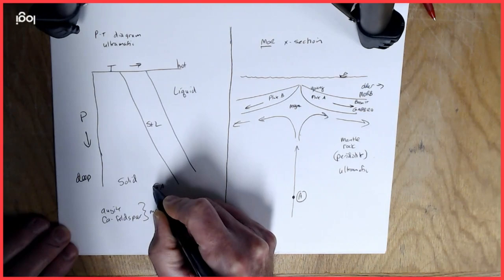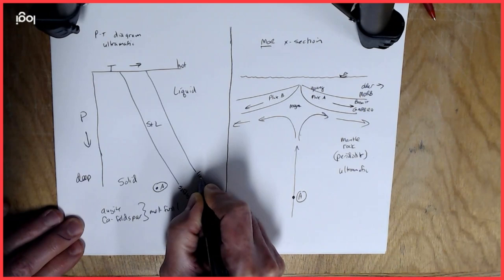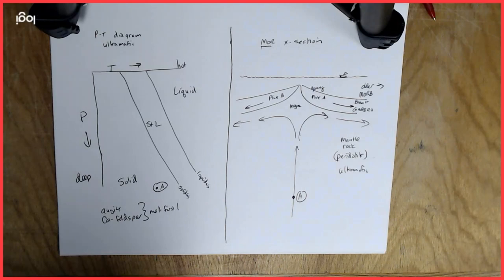So on our pressure and temperature diagram, that might plot somewhere down here. Here's point A. It's solid rock here. It's completely in the solid phase. This is called the solidus, and this is called the liquidus. These are the lines that separate those phases on our diagram.